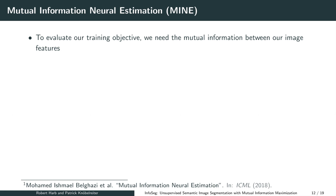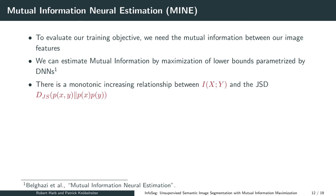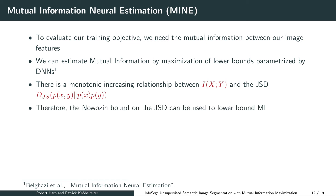The last point of our training process we discuss is how we perform mutual information maximization in practice. Importantly, our local and global image features are high-dimensional continuous random variables. Consequently, the exact computation of mutual information is unfeasible. However, it was recently shown by Belghazi et al. that mutual information maximization can be done by maximizing lower bounds parameterized by deep networks. There is a monotonic increasing relationship between the mutual information of two random variables and the Jensen-Shannon divergence between the joint distribution and the product of the marginal distributions. Therefore, one can use the Nowozin bound on the Jensen-Shannon divergence to lower bound the mutual information.